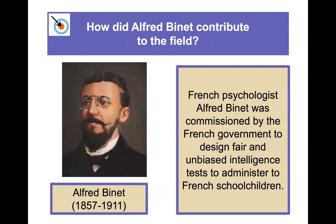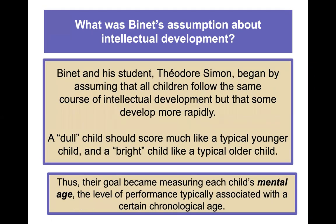Alfred Binet was a French psychologist commissioned by the French government to design fair and unbiased intelligence tests for French school children — they wanted to figure out which kids might need additional help. Binet and his student Théodore Simon assumed that all children follow the same course of intellectual development but that some develop more rapidly than others. A 'dull' child was thought to score like a typical younger child, and a 'bright' child like a typical older child — though these are terms we no longer use.